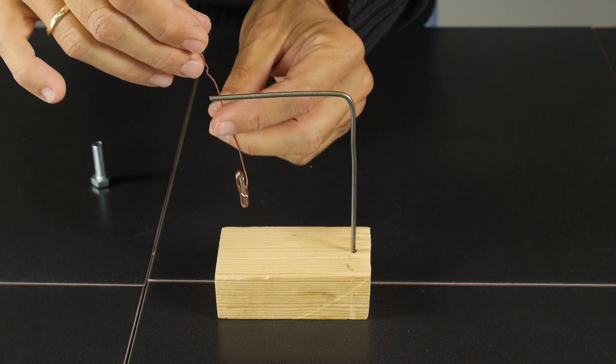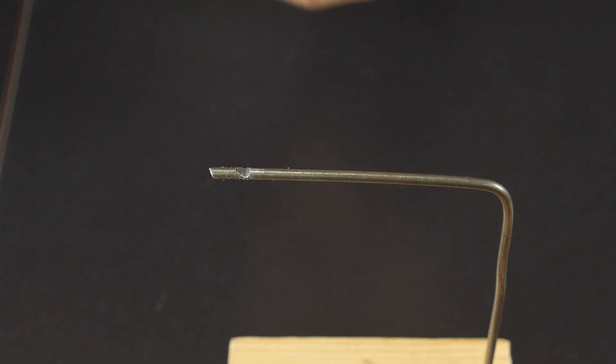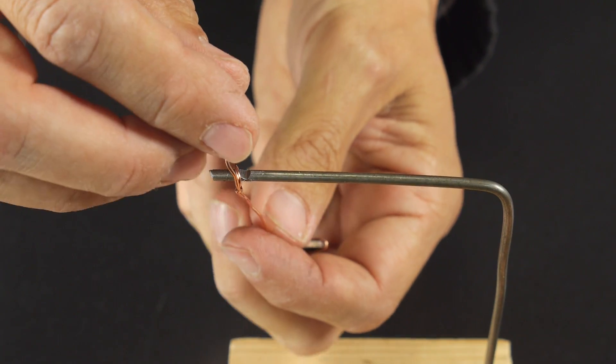Now we hang the pendulum from the stand. So that it does not move from the point we will make an incision here with a file.